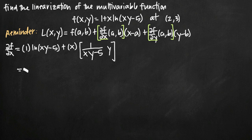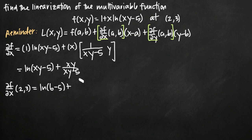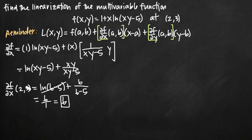Simplifying, we get natural log of (xy - 5) plus xy over (xy - 5). Now we evaluate that at the point (2,3). The partial derivative of f with respect to x at (2,3) equals natural log of (2·3 - 5) plus (2·3) over (2·3 - 5), which is natural log of 1 plus 6 over 1. Natural log of 1 is 0, so that goes away, and we're left with 6. So the partial derivative of f with respect to x at (2,3) is 6.